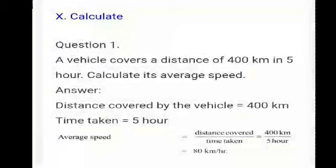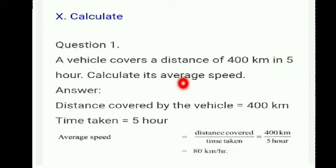Very important calculations. Please listen carefully and watch this video two or three times. Question number one: a vehicle covers a distance of 400 km in five hours. Find the average speed. Answer: average speed equals distance divided by time taken = 400 divided by 5 = 80 km per hour.